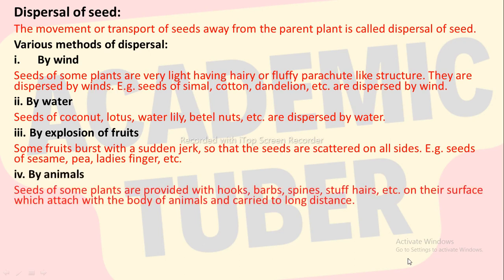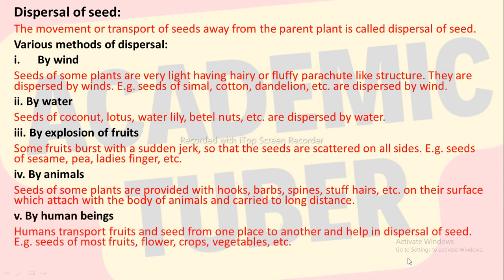Fourth, by animals: seeds of some plants are provided with hooks, barbs, spine, etc. on their surface, which attach with the body of animals and are carried to long distances. And finally, by human beings: humans transport fruits and seeds from one place to another and help in dispersal of seed, for example seeds of most fruits, flowers, crops, vegetables, etc.